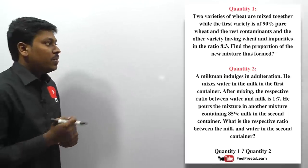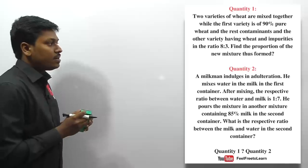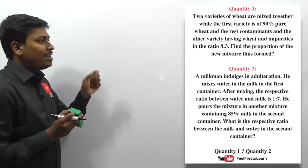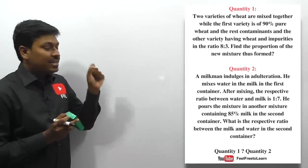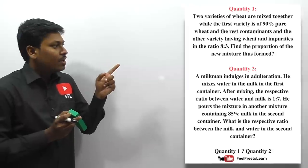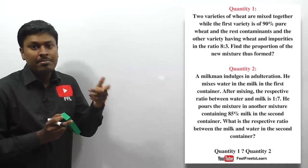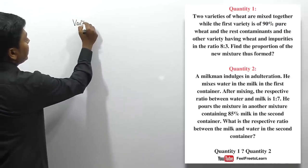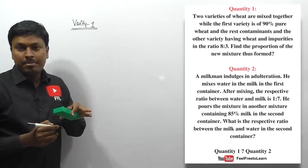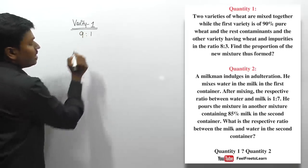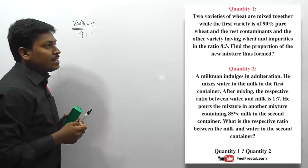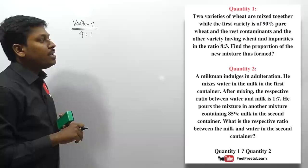Question number one: two varieties of wheat are mixed. The first variety is 90% pure wheat and the rest are contaminants. This question is based on allegation and mixture. In variety one, 90% is pure wheat and 10% is impure, giving a ratio of 9:1 — nine parts wheat and one part impurities. In variety two, wheat and impurities are in a ratio of 8:3.